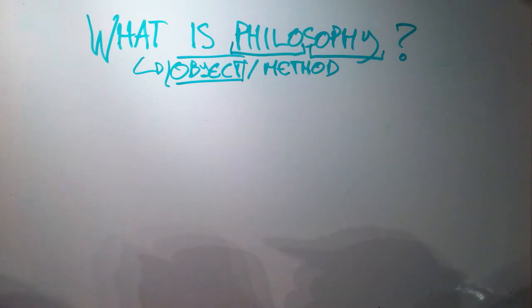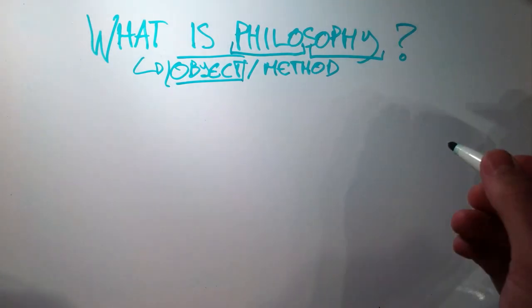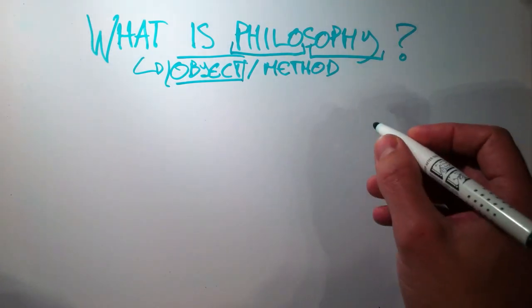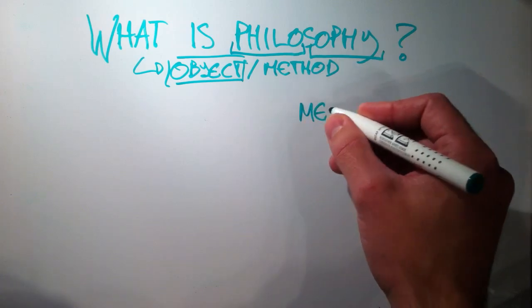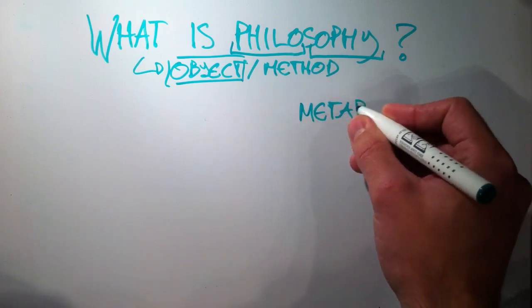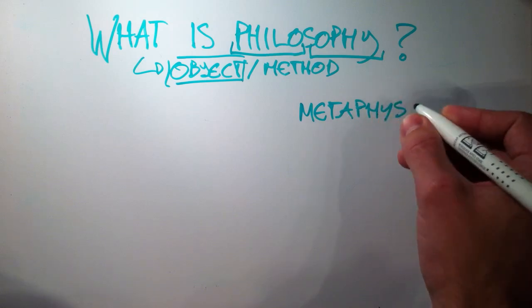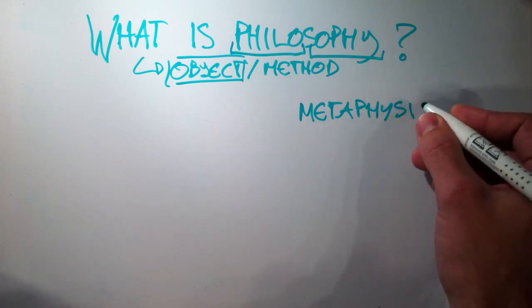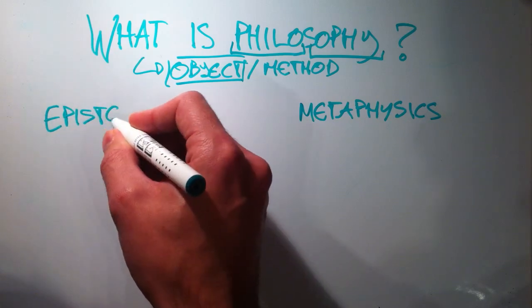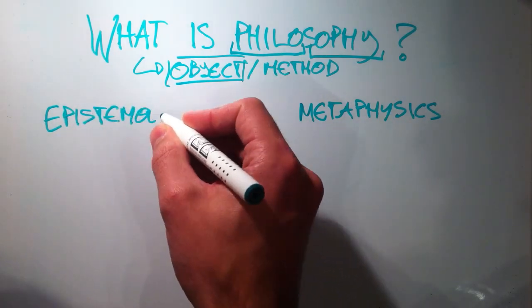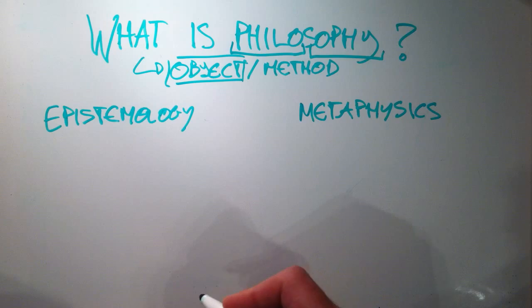Now a better way to go about it is to take an indirect approach and look at the different branches of philosophy. There is, for instance, metaphysics. There is epistemology. And can you guess the last one? Indeed, that is ethics.